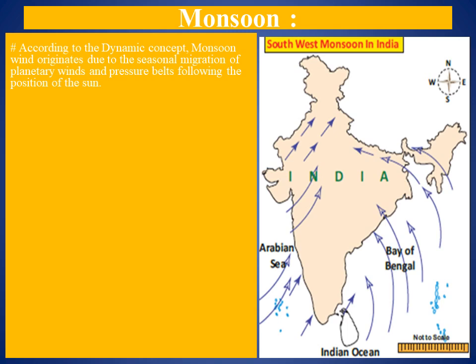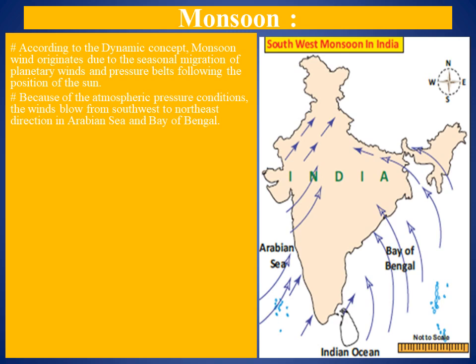While crossing the equator, these winds get deflected and take the direction of southwest, becoming the southwest monsoons. During the winter season, the pressure and wind belts shift southwards, re-establishing the northeast monsoon over the regions. Such systematic change in the direction of planetary winds is known as monsoons. Notably, the Atacama Desert is the driest place on Earth.